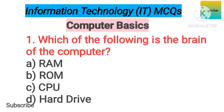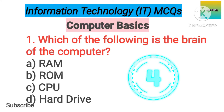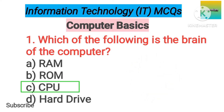Number 1. Computer Basics. Which of the following is the brain of the computer? Option A: RAM. B: ROM. C: CPU. D: Hard Drive. The correct answer is option C, CPU.